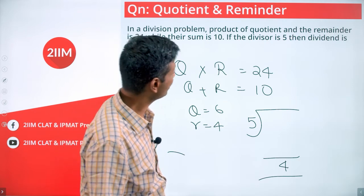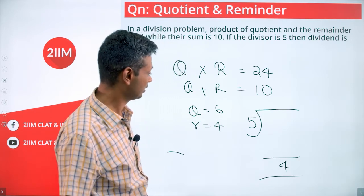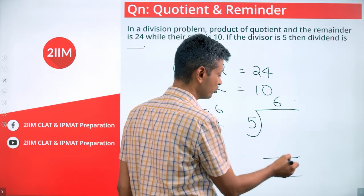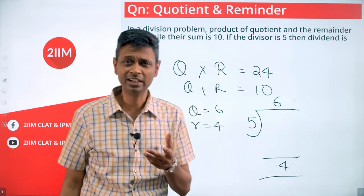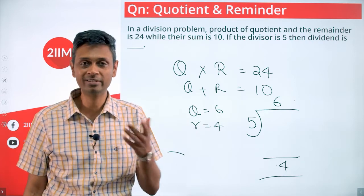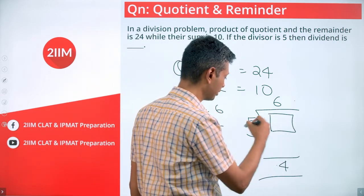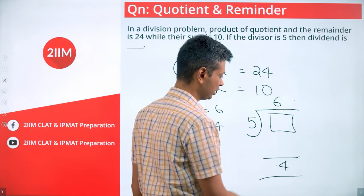We will ask for the dividend. What is the dividend? So, the remainder is 4, the quotient is 6. When dividing by 5, we can get 4 as a remainder, but cannot get 6 as a remainder. We want to find what number, when divided by 5, gives a quotient of 6 and remainder of 4.